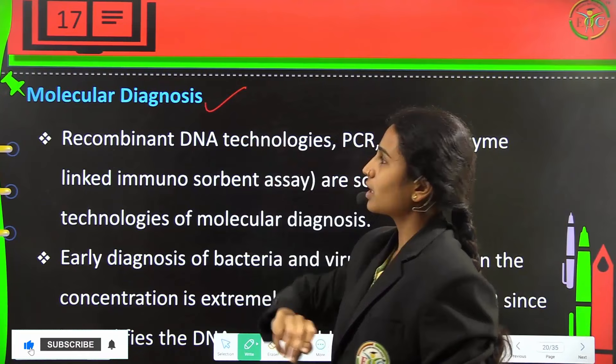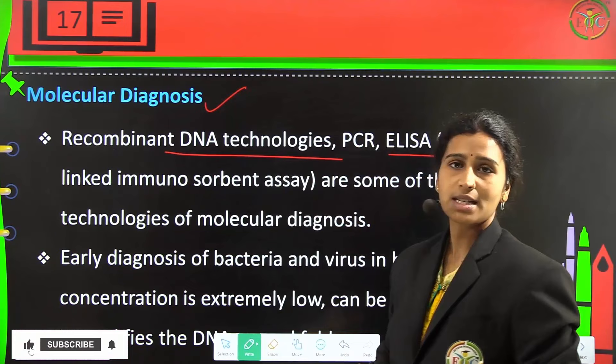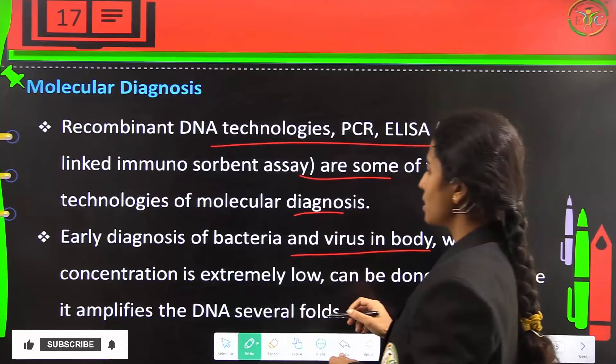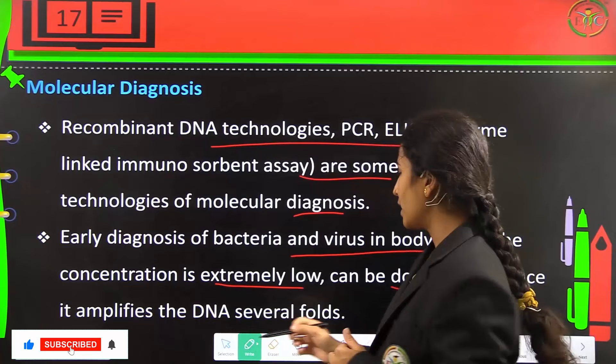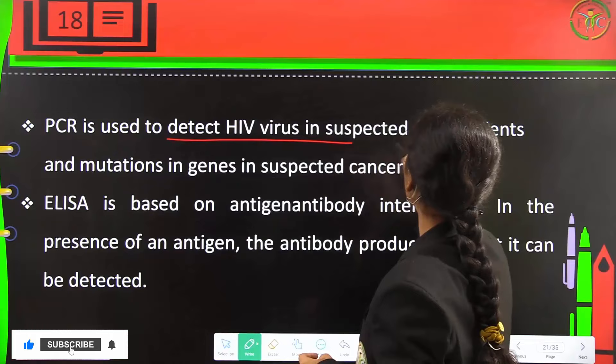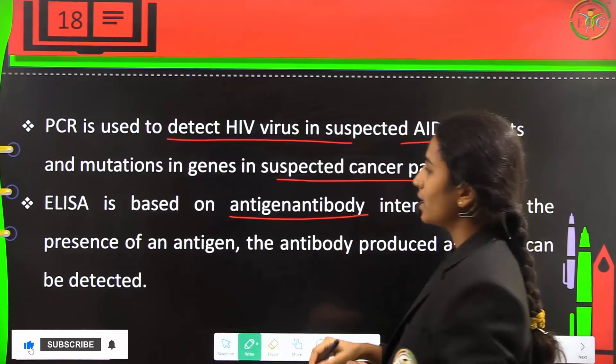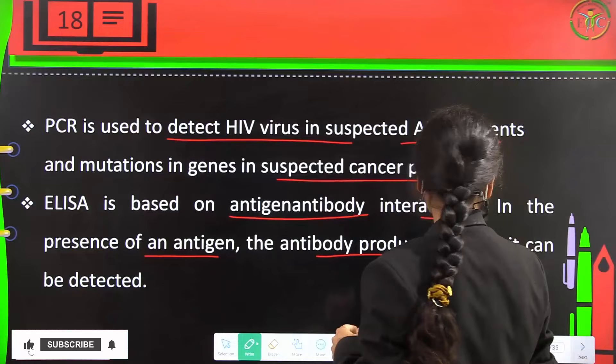Molecular diagnosis uses recombinant DNA technologies including PCR and ELISA — enzyme-linked immunosorbent assay. Early diagnosis of bacteria and viruses when their concentration is extremely low can be done by PCR since it amplifies DNA several fold. PCR is used to detect HIV in suspected AIDS patients and mutations in genes in suspected cancer patients. ELISA is based on antigen-antibody interactions — in the presence of an antigen, the antibody produced against it can be detected easily.